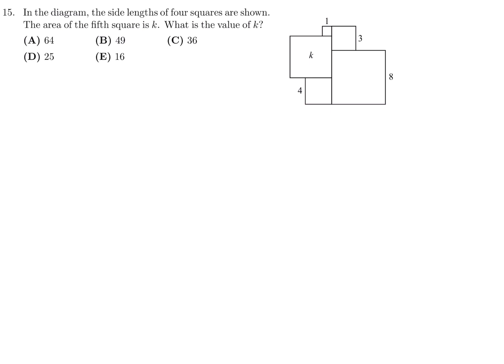In the diagram, the side lengths of the four squares are shown. The area of the fifth square is K. What is the value of K? So these are all squares. Let's see here. If this is 1, then that means this must be 1. That distance from here to here. And therefore, the distance from there to there will be 3 minus 1. So this distance here is 2.